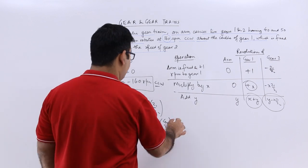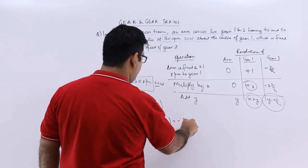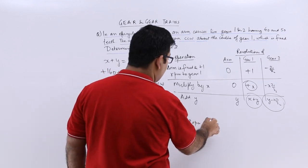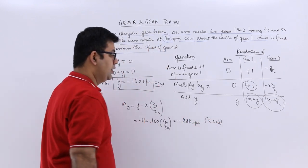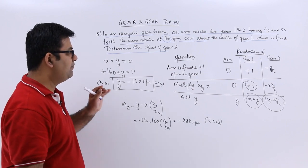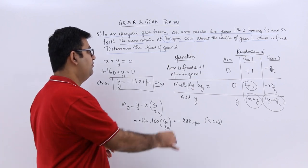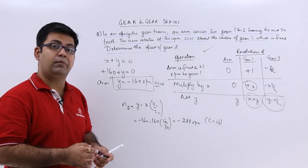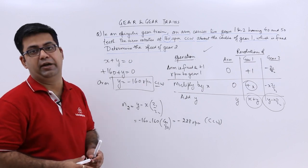So when you find this out you get a value of minus 228 rpm. So minus means it is again in the counterclockwise direction. So it becomes very easy to solve an epicyclic gear train problem with the help of this table. So I hope you understood this. Now let's look at one more question on epicyclic gear train.